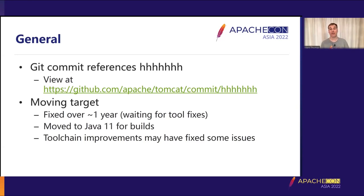During that period, we moved to Java 11 for all builds, primarily to make things simpler for the release manager so they only needed one version of Java. It also allowed us to align build tools between Tomcat versions. Because Tomcat 8.5 depends on Java 7 — which is quite old — we were starting to see issues where tools like Checkstyle required one version with Java 8 and a different version for newer Tomcat branches. Moving all builds to Java 11 means we can have all build tools on the same version and have more common configuration files, which helps maintenance.